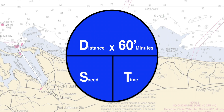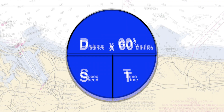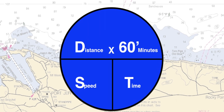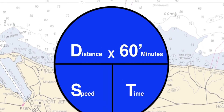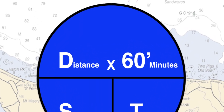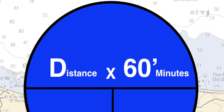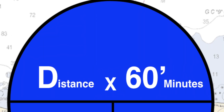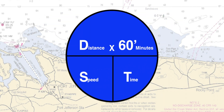To start with, you must enter the two values necessary for you to calculate the third. Since calculating time, speed, or distance all require a time value, time is entered in total minutes, which you learned how to do in my second video, Calculating Nautical Time. Speed is given in knots and distance in nautical miles.